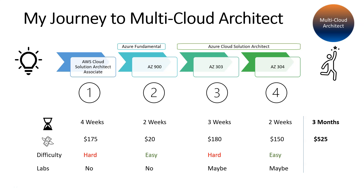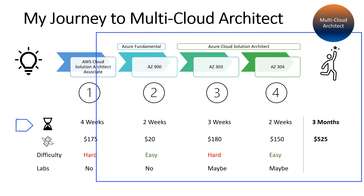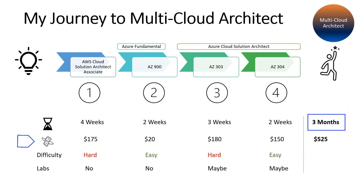Let me summarize my journey to becoming a multi-cloud architect. Time-wise: four weeks for the AWS architect exam, two weeks for AZ-900, three weeks for AZ-303, and two weeks for AZ-304 due to the overlap — totaling three months. Cost-wise: $175 for AWS Solution Architect Associate, $20 for AZ-900 since training and the exam were free and only the practice test needed purchasing, and AZ-303 with the 50% Azure Cloud Challenge discount.